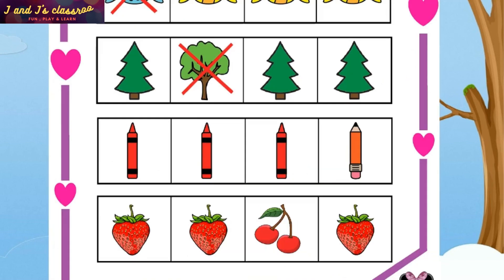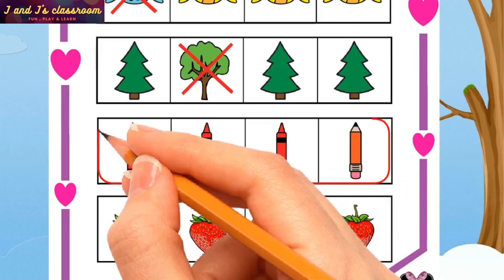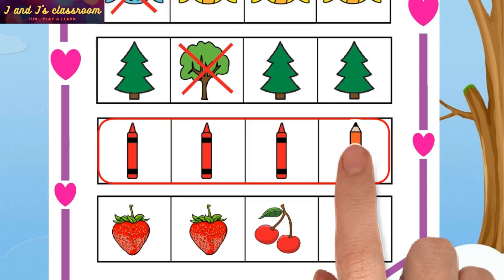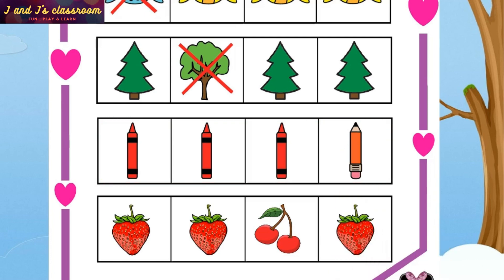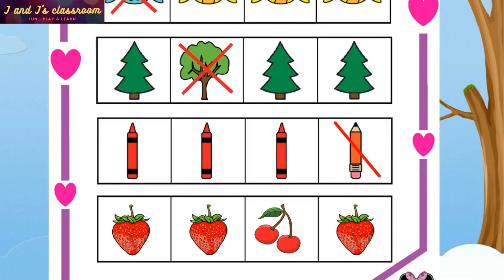Next, look at the fourth row — there are four stationary tools. Which one is different? Can you guess? Pencil! Oh yes, pencil — cross out the pencil.